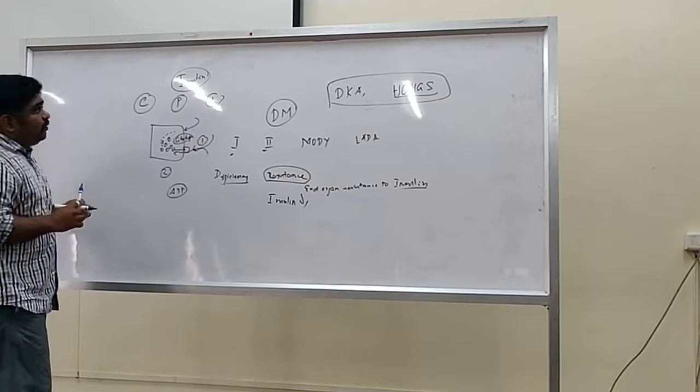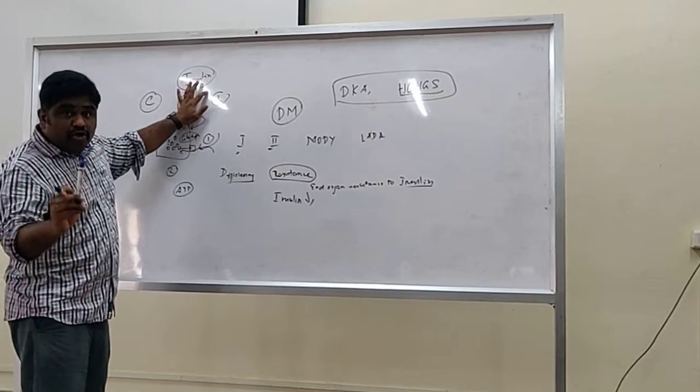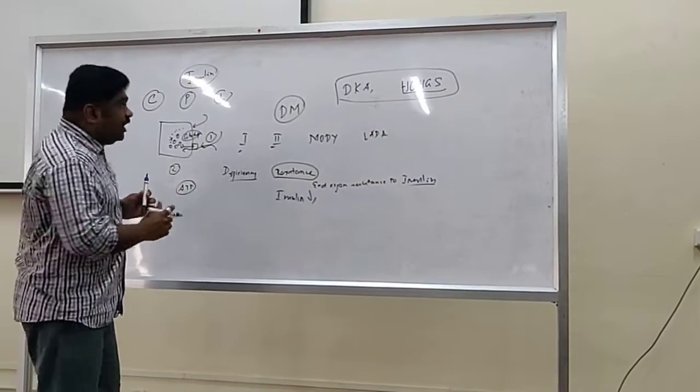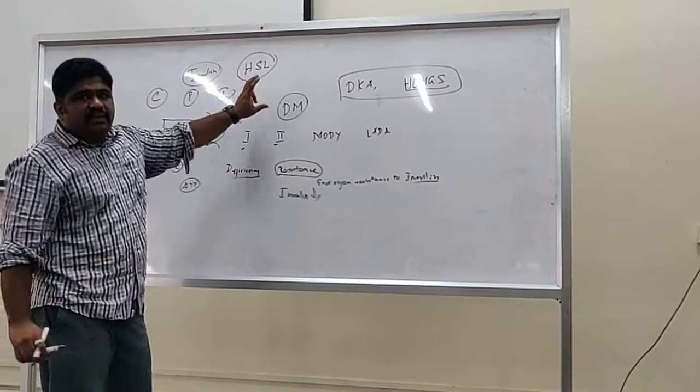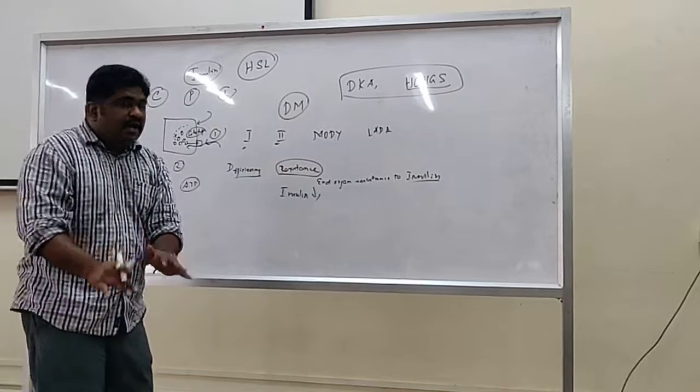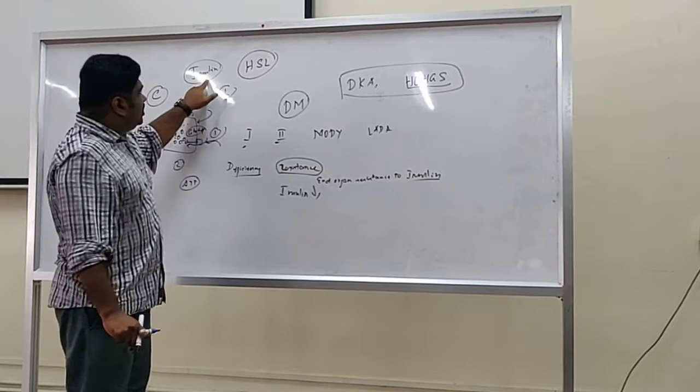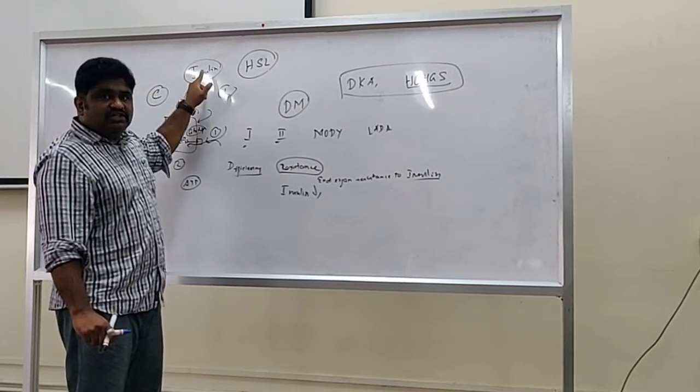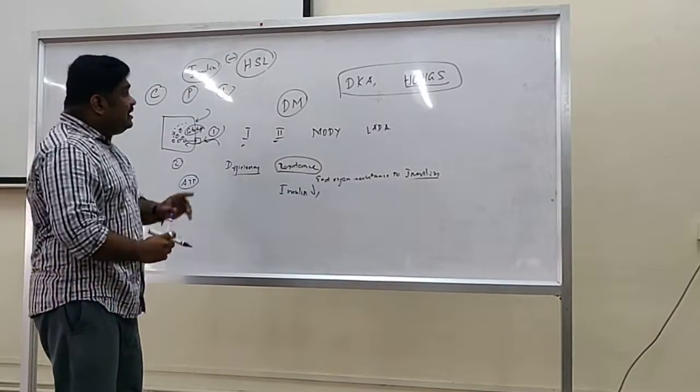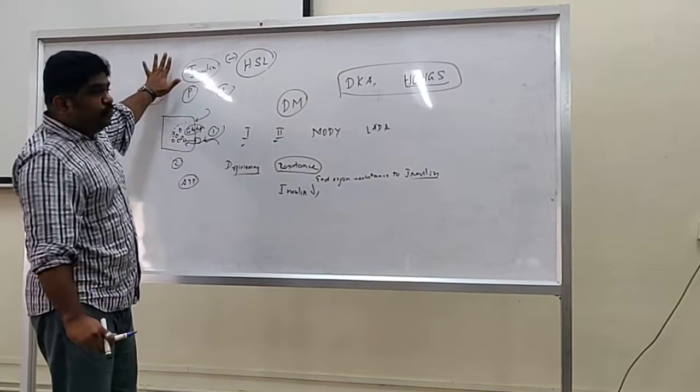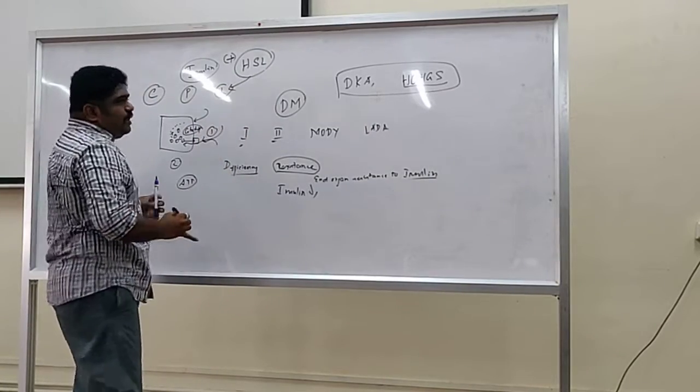Also remember, insulin has equal failure on lipid metabolism also. Insulin is an important hormone which inhibits another enzyme called hormone-sensitive lipase. This hormone-sensitive lipase is always kept under suppression by the hormone insulin. And what do you mean by HSL? Hormone-sensitive lipase means the hormone is insulin, so this lipase is sensitive to this particular hormone called insulin. So in the presence of insulin, lipase keeps its mouth shut. But in case of Type 1 diabetes, because insulin is done away with, this HSL gets activated.